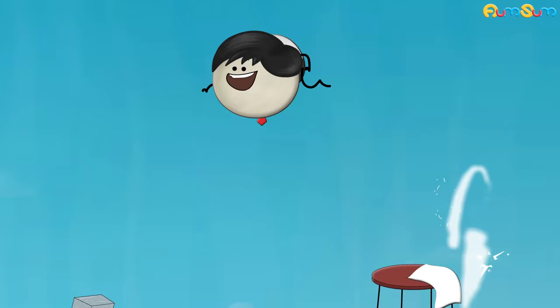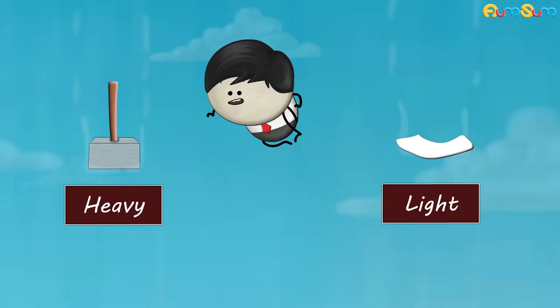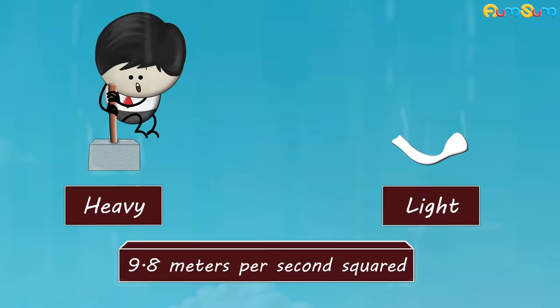Whether an object is heavy or light, all objects accelerate at the same rate towards the earth — that is, at 9.8 meters per second squared. This means all objects should fall at the same speed, right?